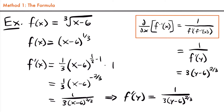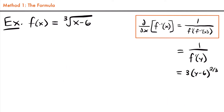Now all we need to finish this derivative of our inverse function is to substitute y with the inverse function. We need to go back to our original function and find the inverse. Let's rewrite our function by changing f(x) to y: y equals the cubed root of x minus six. Be careful here — do not plug this function in for y directly. The y in the formula represents the inverse function. So we're going to find the inverse of this function.